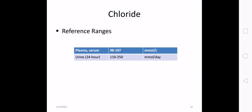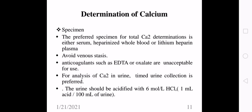Reference values for chloride: serum or plasma is 98 to 107 millimoles per liter; urine 24-hour collection is 110 to 250 millimoles per day. It is better to collect a 24-hour sample to avoid variation during the day.